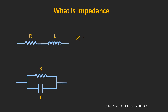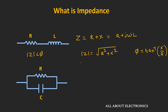The total impedance will be the summation of the resistive element as well as the reactive element. So in this case, the total impedance will be equal to R plus jωL. Many times this impedance is also represented in polar form, meaning it has some finite magnitude as well as some finite phase. The magnitude of this impedance can be given by the square root of R² plus X², where X is the reactance of the circuit. The phase of this impedance can be found by tan⁻¹ of X divided by R.